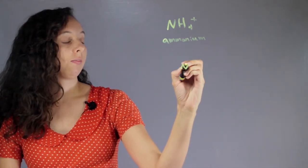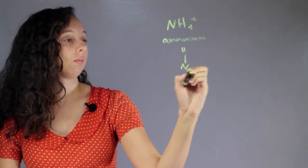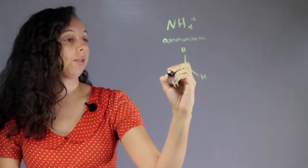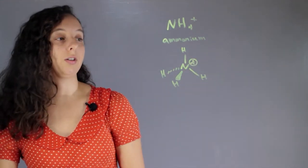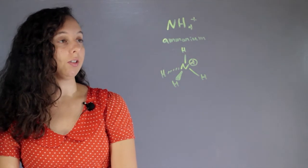So we have nitrogen. We know we have four H's. We're going to draw a little 3D with some wedge and dashes because I'm fancy. And we have a positive charge on the center atom, nitrogen. So is this covalent or ionic?